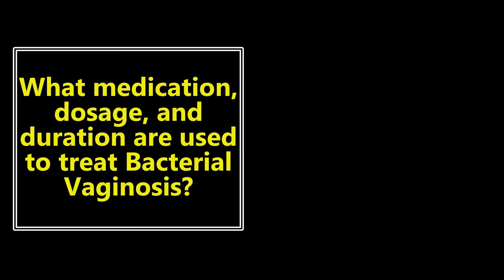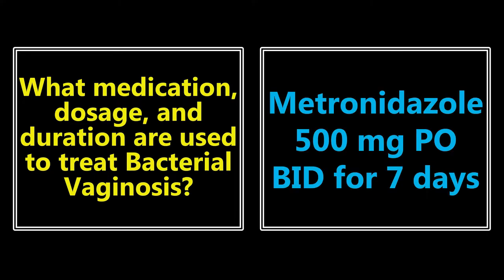What medication, dosage, and duration are used to treat bacterial vaginosis? The basic level of understanding is knowing the medication, but you need to go further — you need to know dosing, frequency, all of those things. If we're treating bacterial vaginosis, it's going to be metronidazole 500 milligrams PO BID, two times a day for seven days. This is generally the treatment, and it's probably something you've already used if you diagnosed this in the ED.